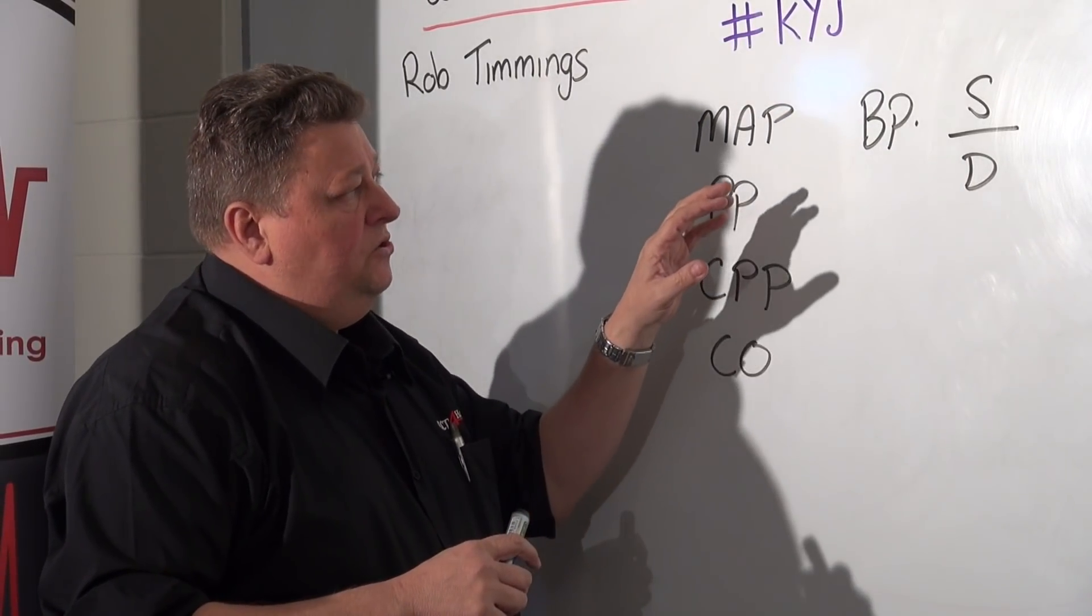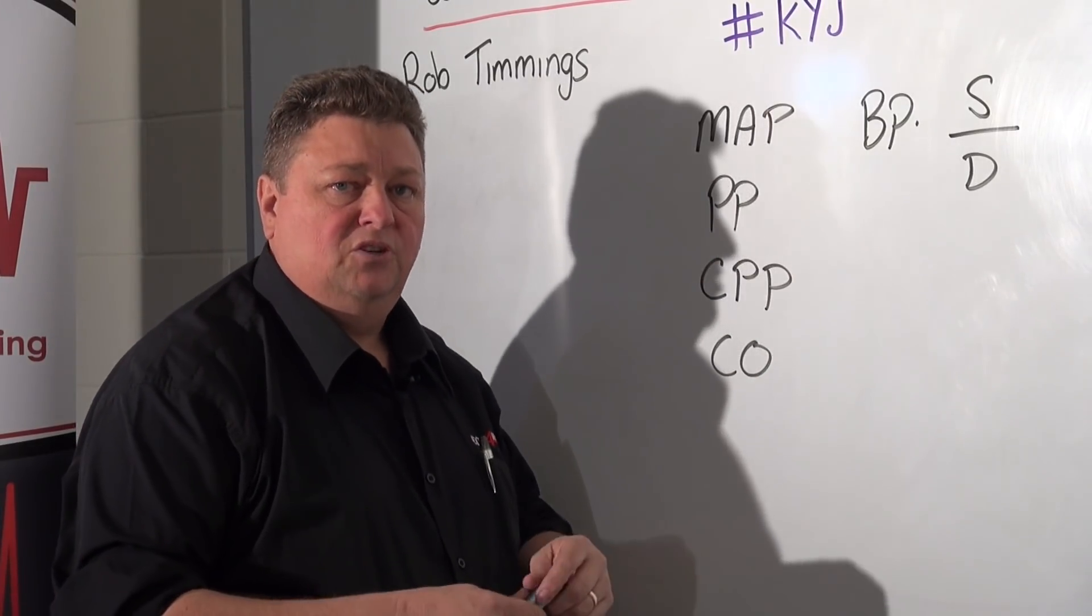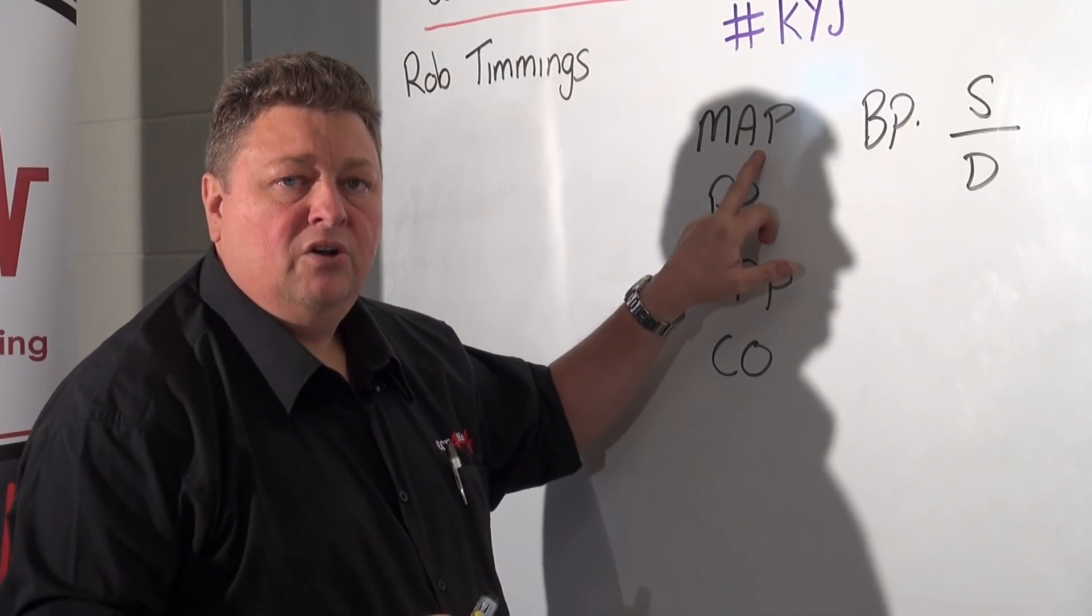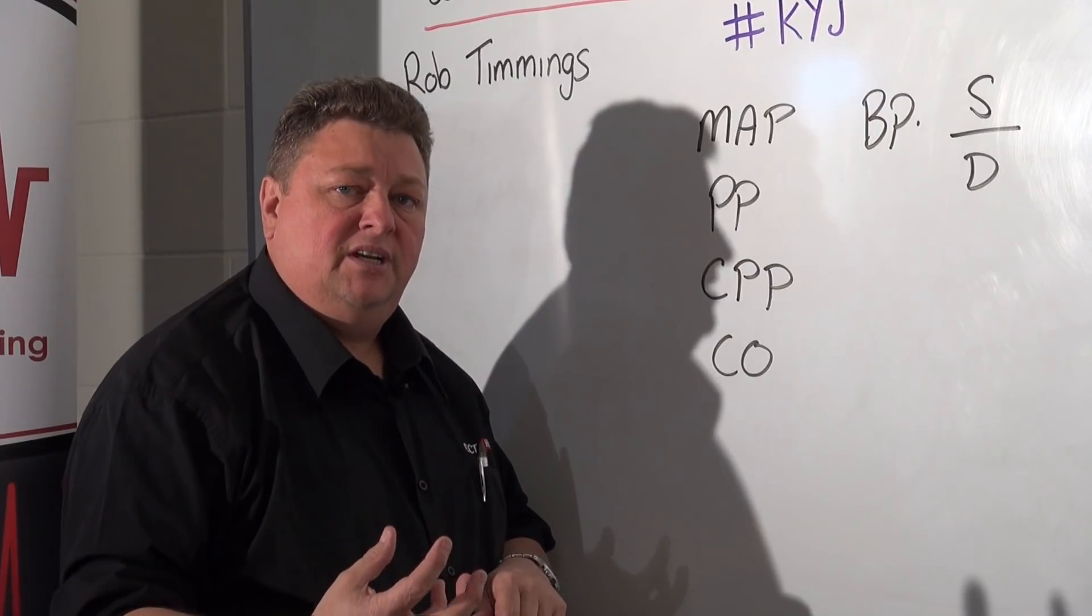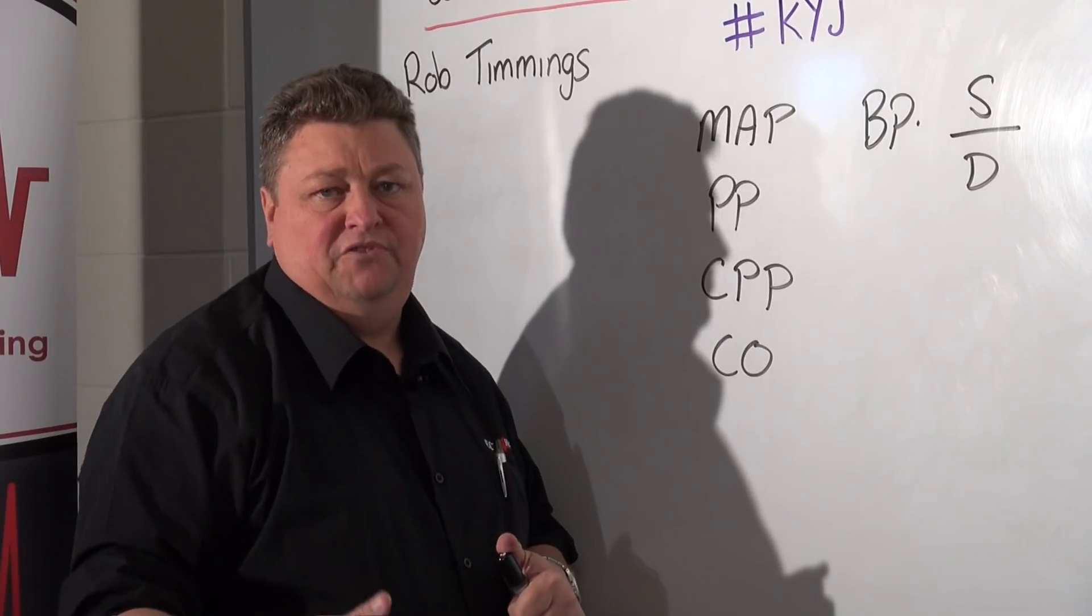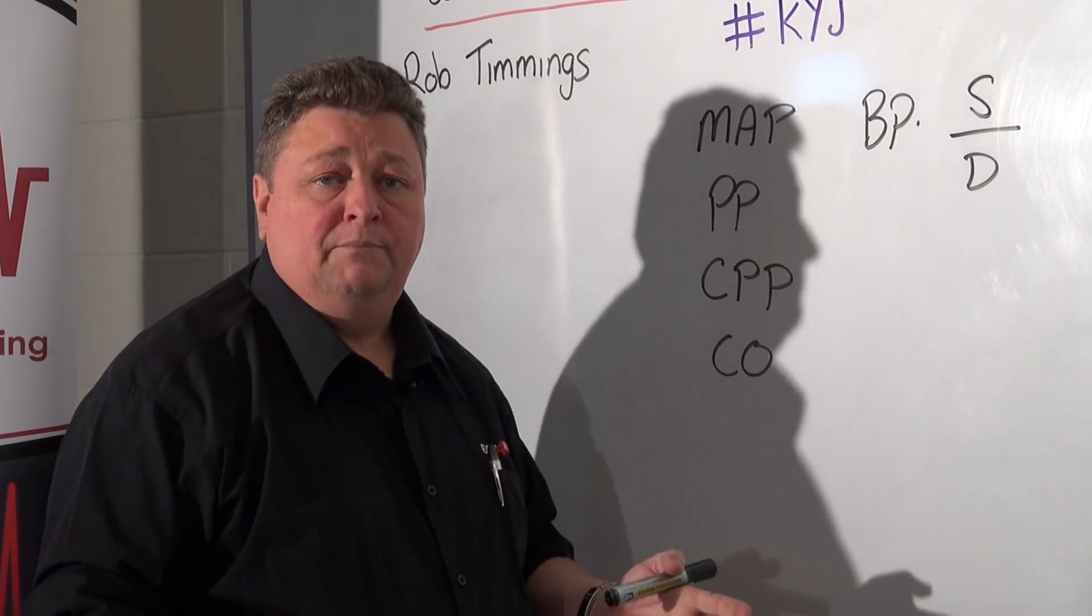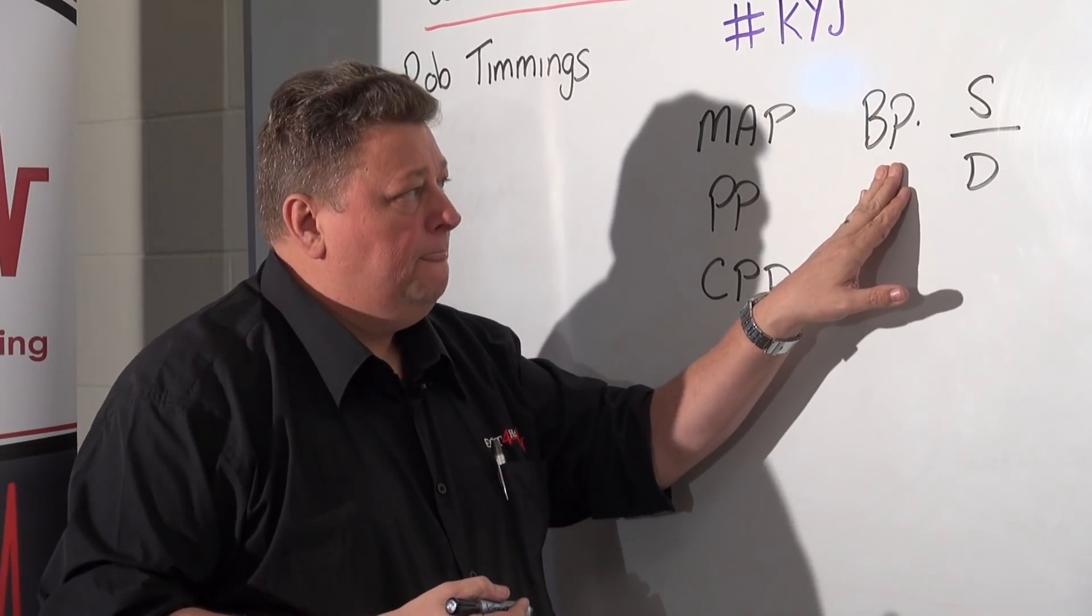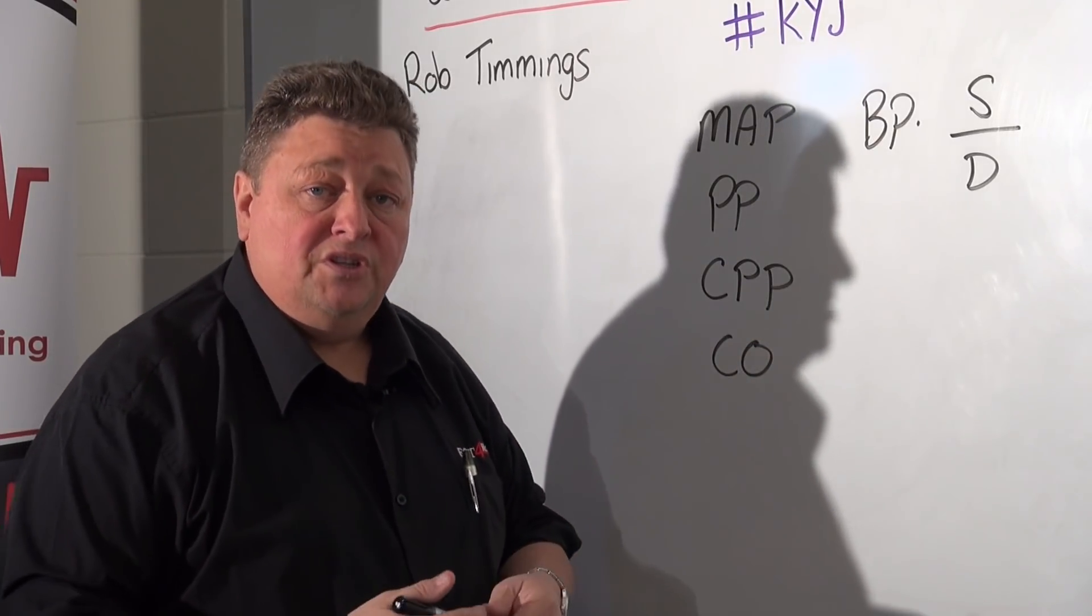But importantly somewhere between these two numbers the systolic and the diastolic blood pressure exists the mean or the average. The reason that we use our mean arterial pressure in some areas of clinical practice is predominantly because mean arterial pressure is that part of our blood pressure that clinicians will use to determine the organ perfusion pressure.